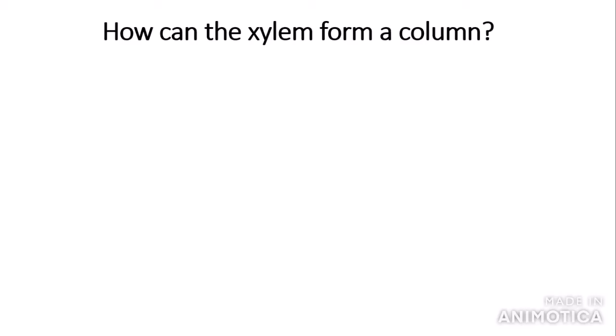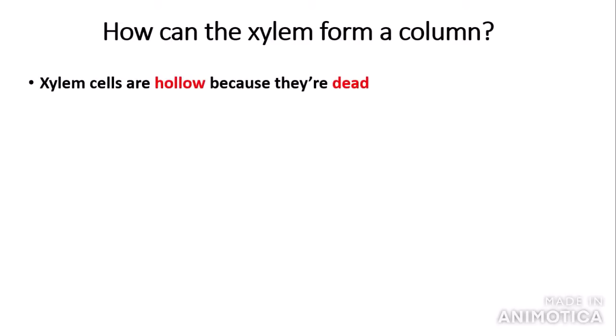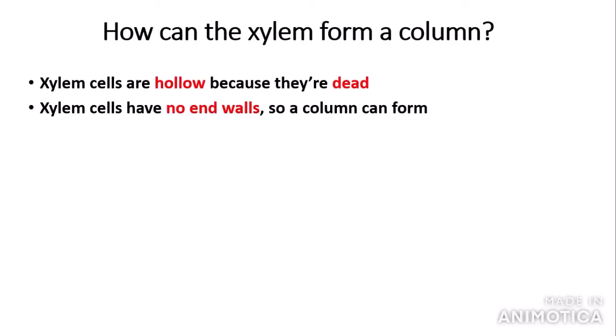But how can the xylem form a column if they are made up of individual cells? The xylem cells — the cells that make up the xylem column — are hollow because they are dead, so they do not contain organelles. Also, they have no end walls. This means that the continuous column is able to form.